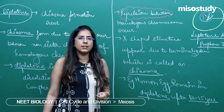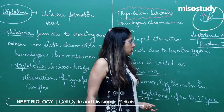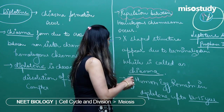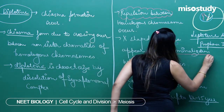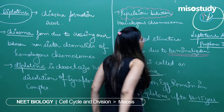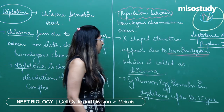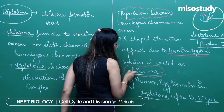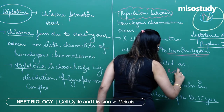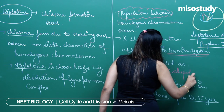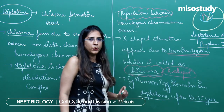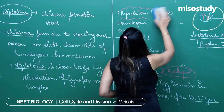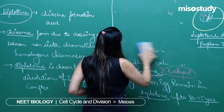After 12 to 15 years, the human egg again goes into the next stage called diakinesis. You need to remember the word terminalization and the formation of chiasma. Chiasma is nothing but an X-shaped structure.